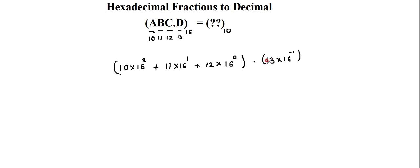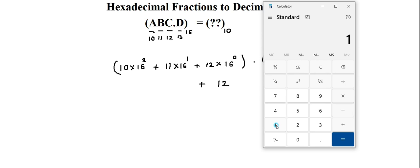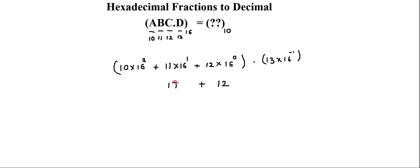So this is what the conversion process is. Next is only the simplification process. This is 12 into 16 to the power 0; 16 to the power 0 is 1, so 12 into 1 leads to 12. Plus next I have 11 into 16 to the power 1; 16 to the power 1 is 16, so 11 multiplied by 16 gives me 176. Similarly, the last one: 16 to the power 2 is 256, that gets multiplied with 10, so I have 2560.